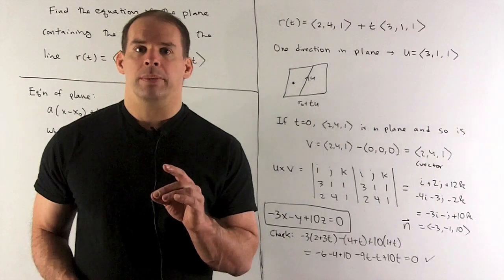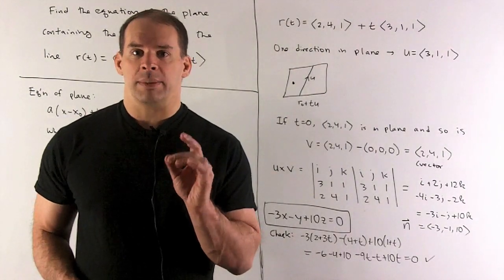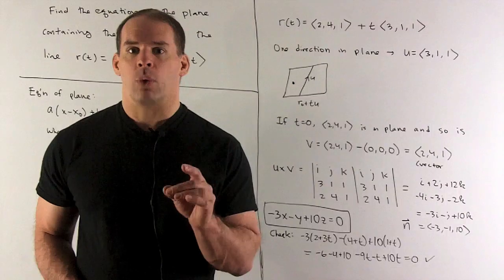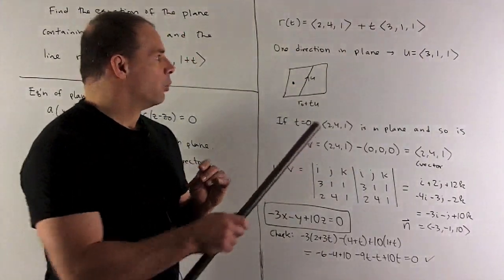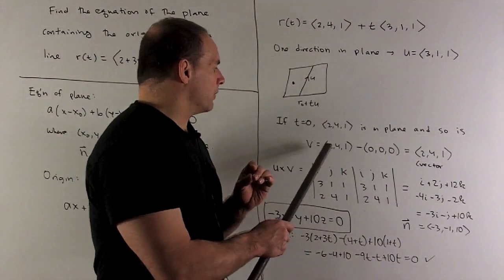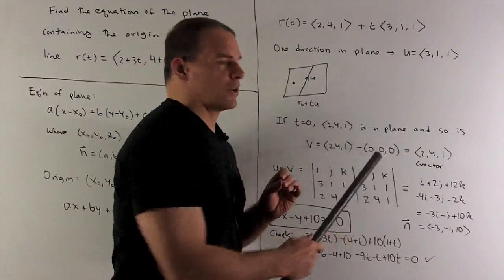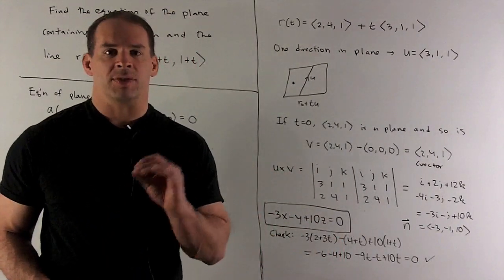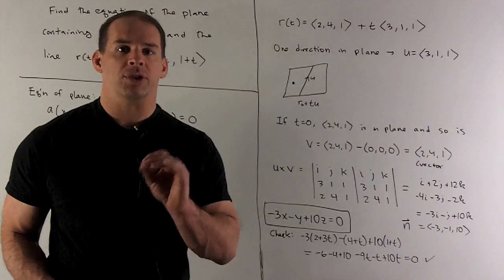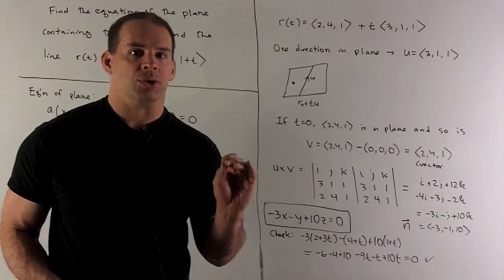Now, let's note. First, if I let t be equal to 0, that'll give me the point (2, 4, 1). What I can do then is, we have (2, 4, 1). We have the point (0, 0, 0). So if I take their difference to form a vector, that gives me back going from the point (2, 4, 1) to the vector (2, 4, 1).